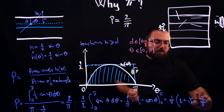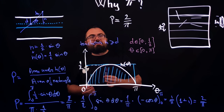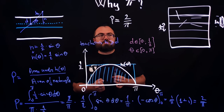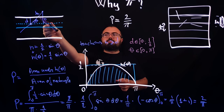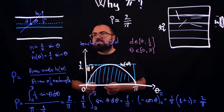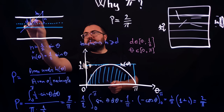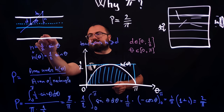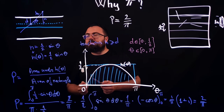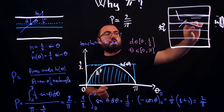Evaluating: cosine of pi is negative 1, so negative cosine of pi gives positive 1. Cosine of 0 is 1, so negative cosine of 0 gives negative 1. Adding these gives 2, multiplied by 1 over pi gives 2 over pi. This proves that the probability of the needle touching a line is 2 over pi. The symmetrical cases for angle greater than pi and midpoint in the lower half are handled the same way.